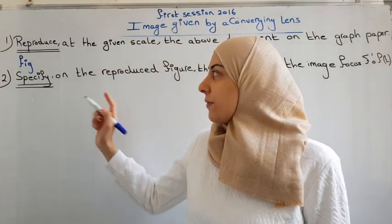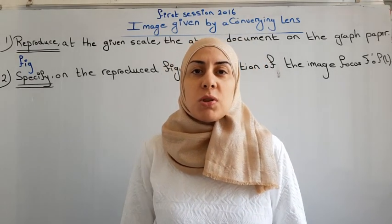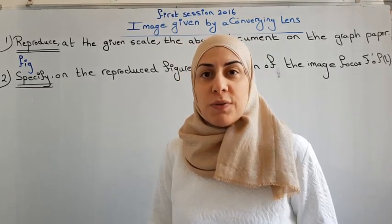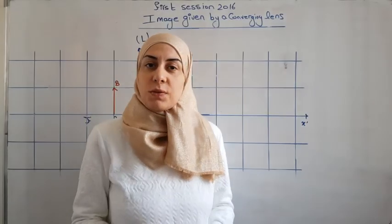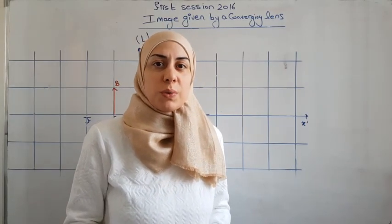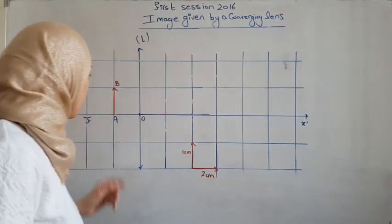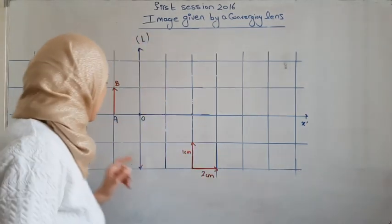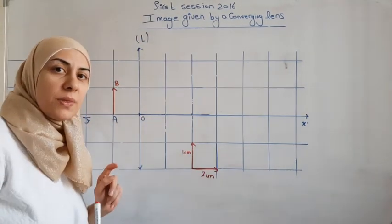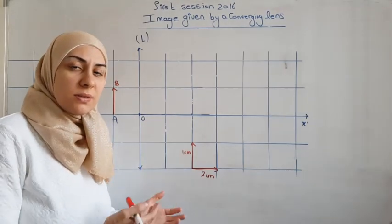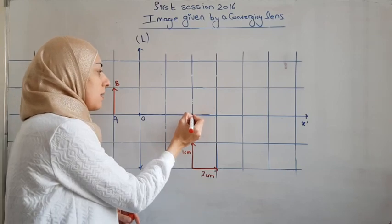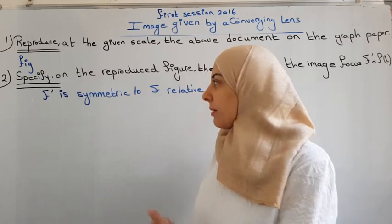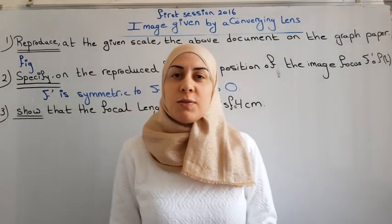The second question asks us to specify the position of the image focus F' of the lens. Specify means we have to indicate and justify. Looking at the figure, F and F' are symmetric relative to O. So if F is two centimeters away from the lens, then F' is also two centimeters graphically away from the lens, on the other side. The image focus F' is symmetric to F relative to O.